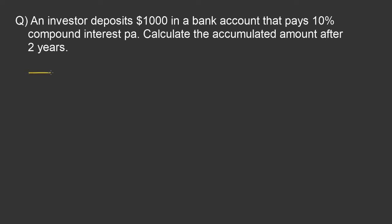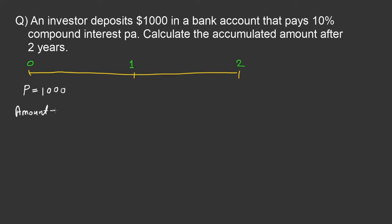Consider a timeline with periods 0, 1, and 2, so I mark 0, 1, and 2 periods. In this question, this period is year. From the question, it is clear that at period 0 — that is now — a principal of $1000 is deposited. So the amount in the bank account at period 0 is 1000.